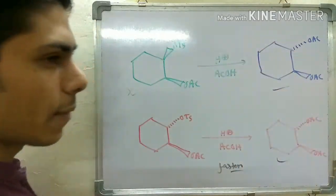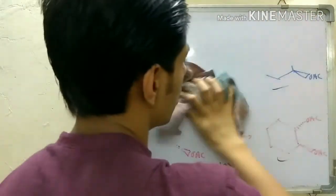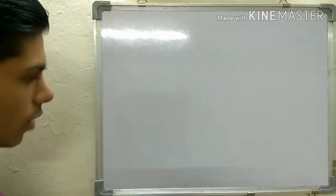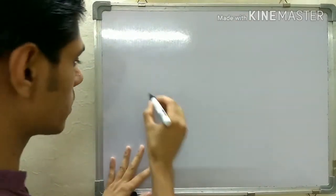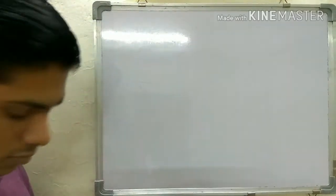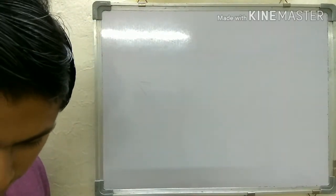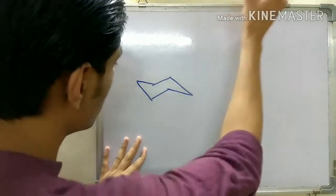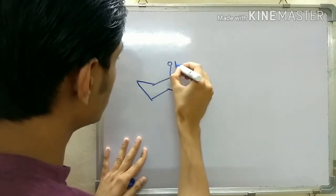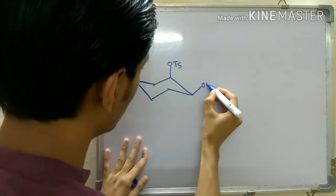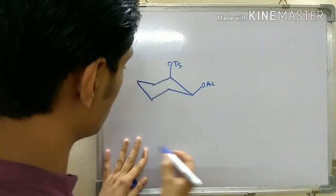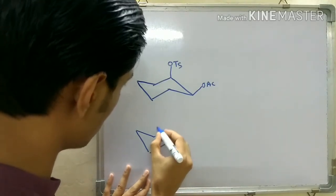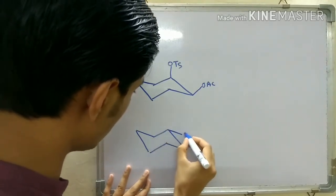To look into the deeper details of this reaction you have to draw the starting materials in their proper stereochemical form, that is the cyclohexane chair form. The first molecule where both groups are cis can be represented like this - you have the OTs group here and the OAc group here, both are cis. In the second case where your groups are trans, you can represent it like this - here you have the OTs group.